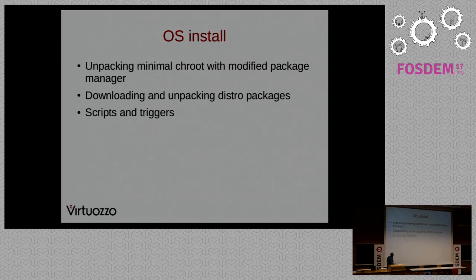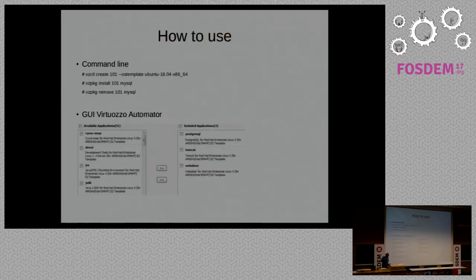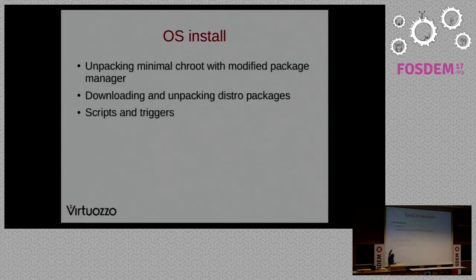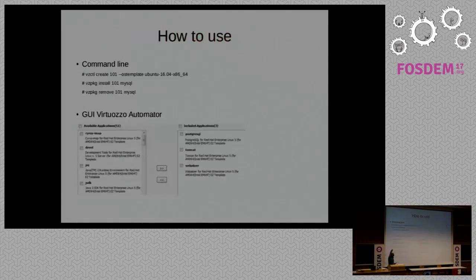How to use it? It looks very easy. VZCTL create with your container number — in fact it's just a name — then the OS template, and you put what you want, in my example just Ubuntu. The second line is for an APT template, and the third is an example of removing. It sounds very useful and fast.